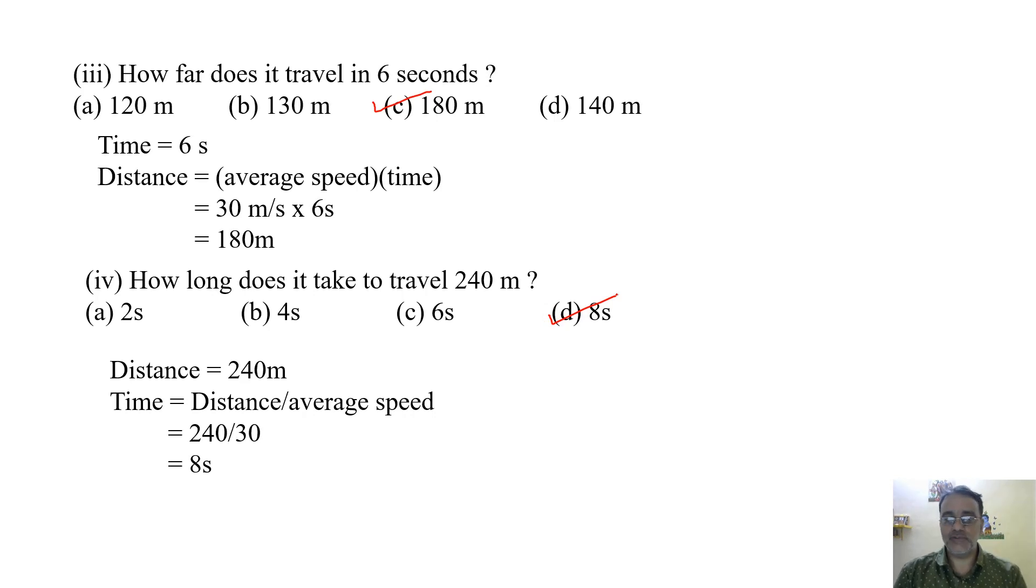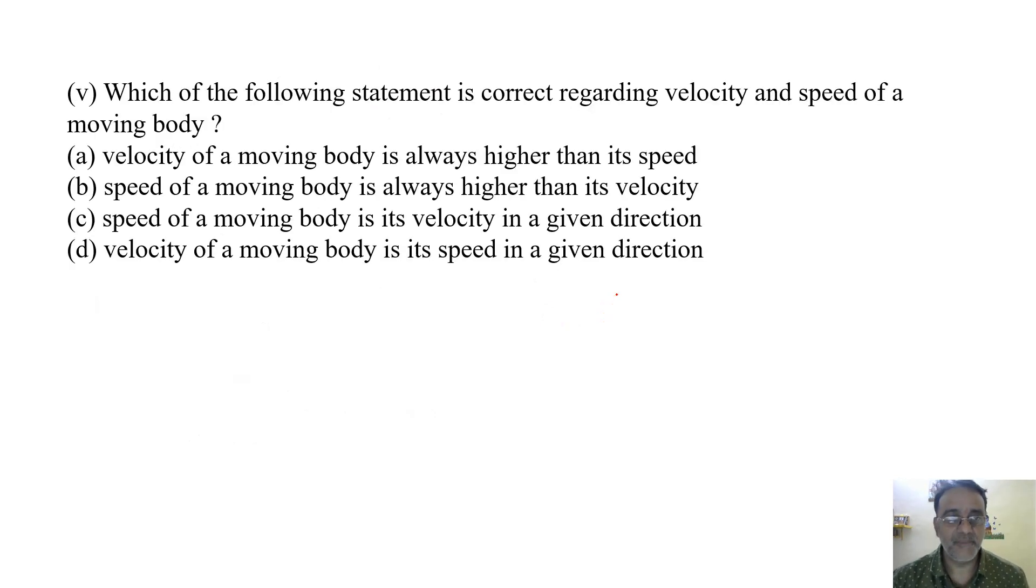Now we will move toward the final last question. Which of the following statement is correct regarding velocity and speed of a moving body? First, velocity of a moving body is always higher than its speed, which is wrong. Because in the previous example we saw that velocity was 0 and speed was 200 upon 2 meters per second.